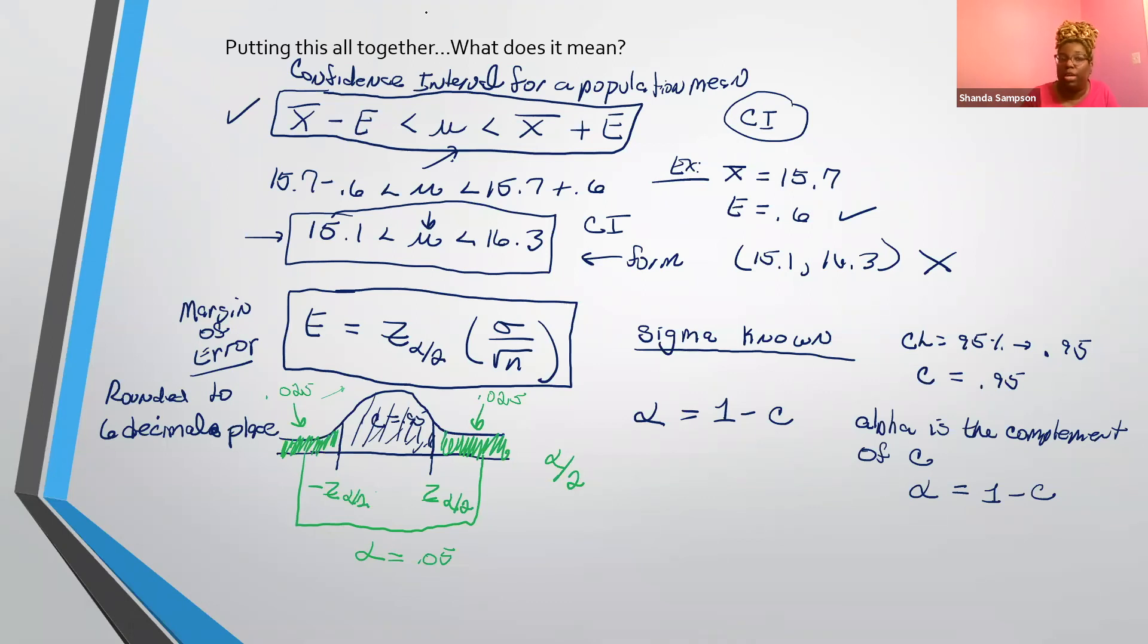So we have the confidence interval for the population mean and we have the margin of error. Recap, the rounding rule for x bar is if there's data, meaning that you will be putting in L1, L2 or something, one more than the highest data place, the highest decimal place listed. If there's no data, for example, in this example, there was no data, then you are to round to the parameter that's given. So since this is one decimal place, this has to be one decimal place.